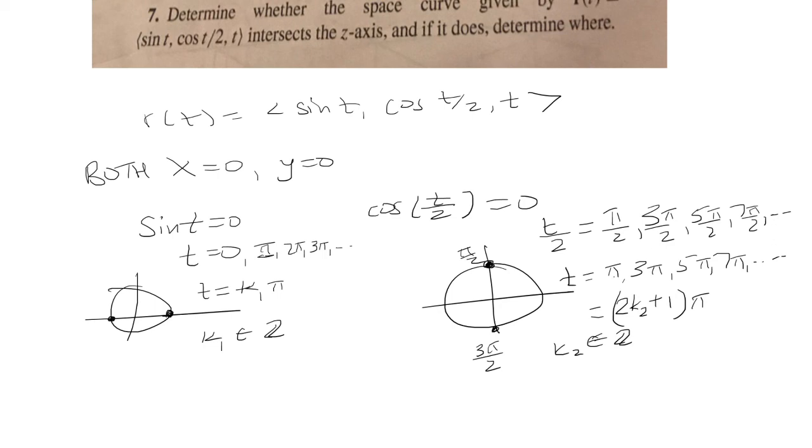They have in common π, 3π, 5π, 7π, etc. So really, if I were to see what they have in common, I would end up getting (2k + 1)π, and that's what t is equal to.